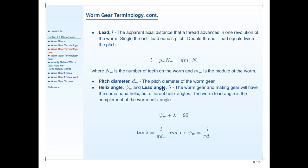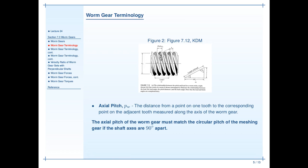These two angles are complementary to each other. So P sub W plus lambda is equal to 90. The worm gear and the mating gear will have the same hand helix, but different helix angles. The worm lead angle is the complement of that helix angle. We can also associate, via trigonometry, the pitch diameter with the lead and the lead angle. If we go back and take a look at this, you can see that that helix angle is the angle of the tooth with the axis. The lead angle is the angle of the tooth from the vertical to the axis.